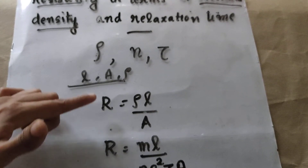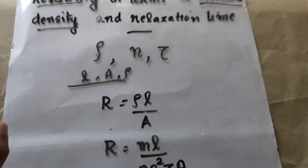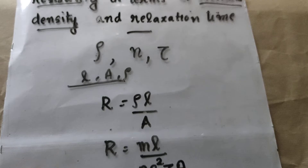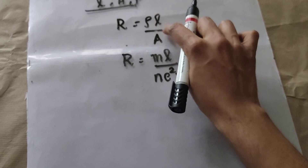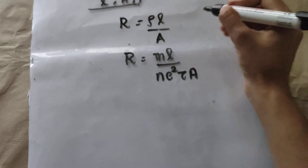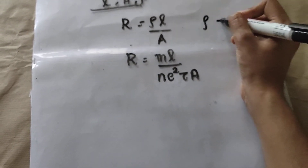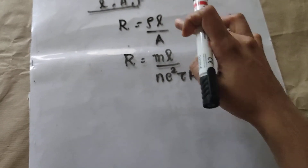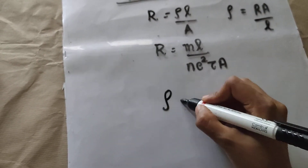So we have two equations for resistance. From these equations, how can we find resistivity rho? Rho can be written as rho = R × A / L.